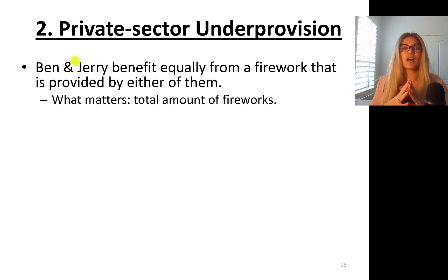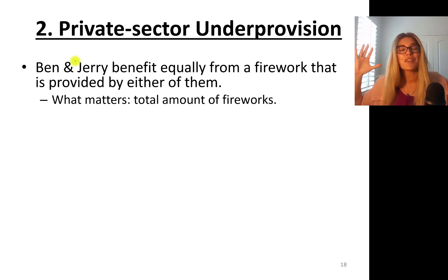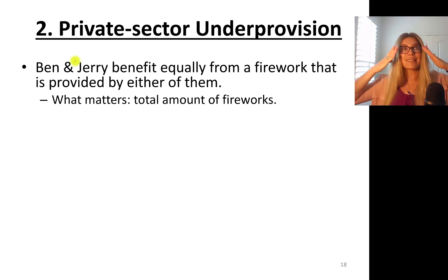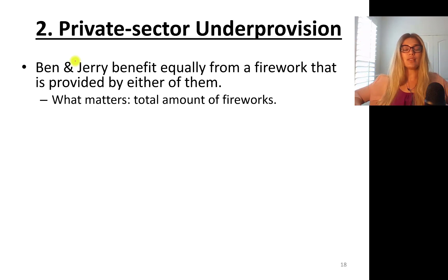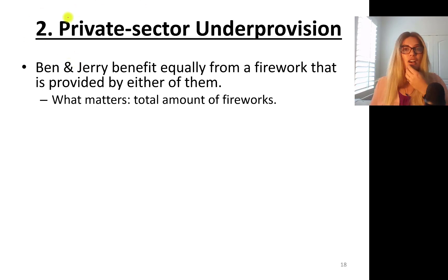Ben and Jerry benefit equally from a firework provided by either one of them. It's the 4th of July. Let's say I bought lots of fireworks for $500 and I'm deploying them in my neighborhood — assume it's legal to do so within city limits. All my neighbors are enjoying the show. This is an example of private provision of a public good. However, this is not going to be sufficient for the entire city. What matters is the total amount of fireworks.